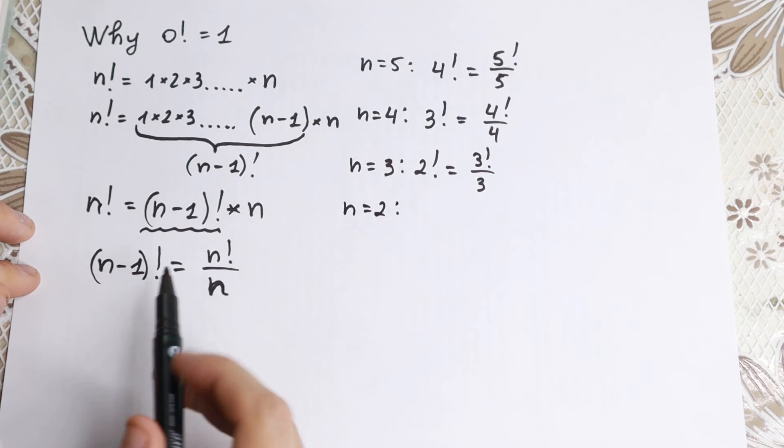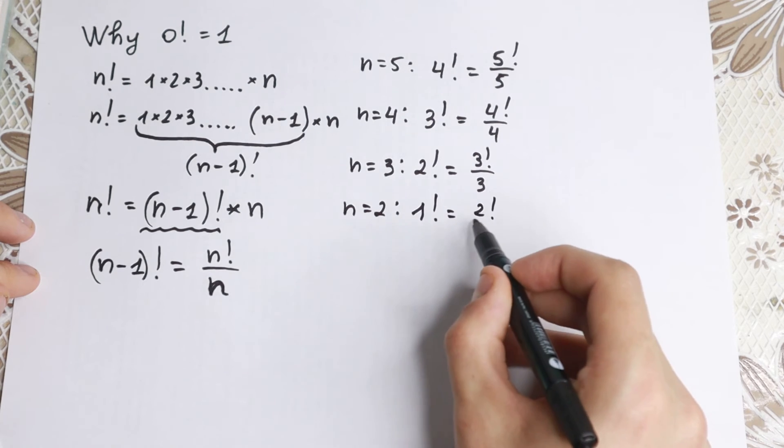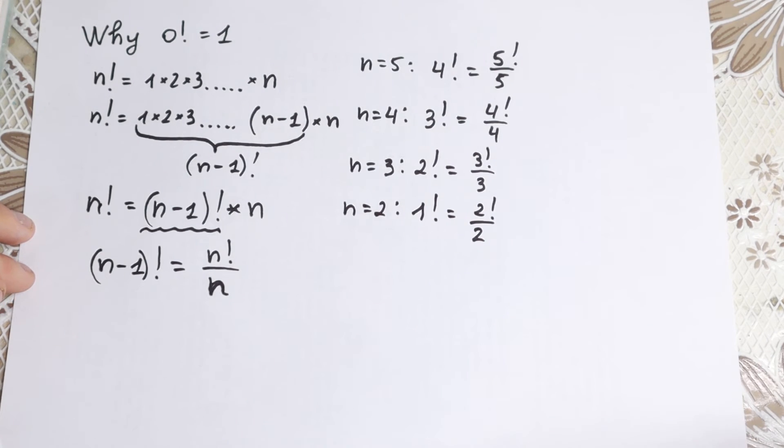n equal to 2. What we have? 2 minus 1, we have 1 factorial, equal to 2 factorial over 2. And finally our moment, our case.